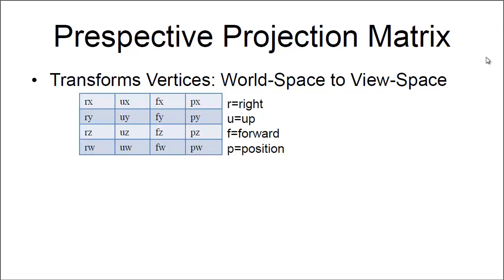This is what it basically looks like — we have 4 columns: one for right, the next for up, and then forward and position. The math involved is not something found out by game hacking; it's actually used in the game to project something on your screen. That's why I said it's quite clever to read a book on game development, because this is what you find in there.